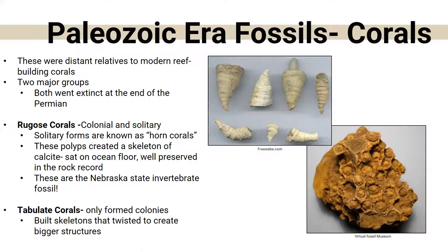There were also brachiopods — marine shelled creatures very similar to present-day clams or mollusks, except they were symmetrical, whereas mollusks are not. And crinoids, sometimes called sea lilies, are extremely abundant and you can still find them in southeast Nebraska — places like SRAM Education Center. They were attached to the bottom with feathery arms to capture food, but went extinct at the end of the Permian.